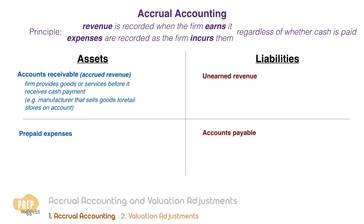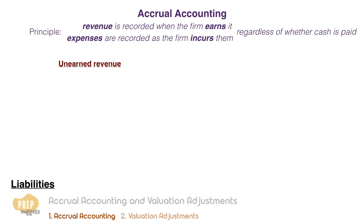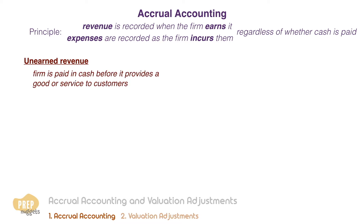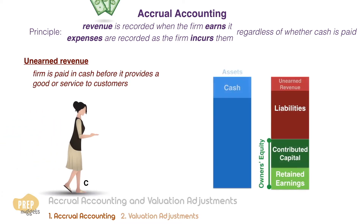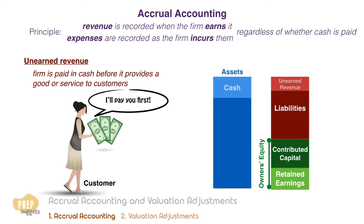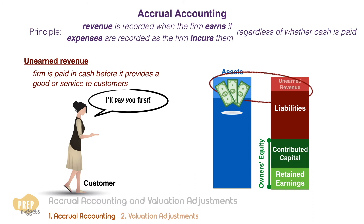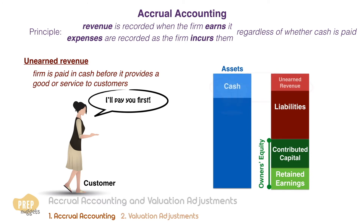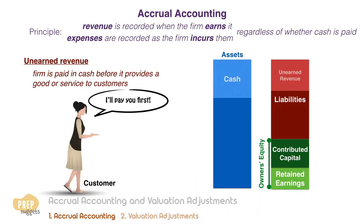The opposite of accrued revenue is unearned revenue. In this case, the firm is paid in cash before it provides a good or service to customers. The customer chooses to pay cash first before receiving the goods or service. The firm records a cash increase on its balance sheet, and unearned revenue — a liability — increases by the same amount.